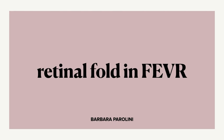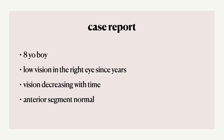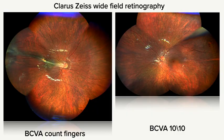I present you a case of retinal fold in familial exudative vitreoretinopathy. An eight-year-old boy presented with low vision in the right eye since many years but decreasing with time. The anterior segment was normal.